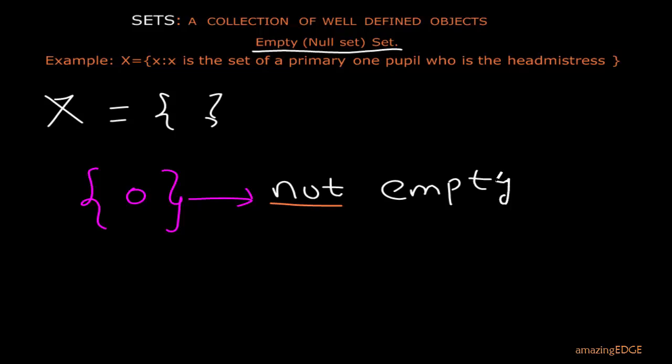So we can actually write that the number of elements. Supposing I call this set B. So B equals to this. So I can say that the number of elements in set B is now equals to 1. So it contains an element. So it's not empty. But if you have a curly bracket in this form. You have your curly bracket without writing anything inside it. That means that that set is empty. It's an empty set.